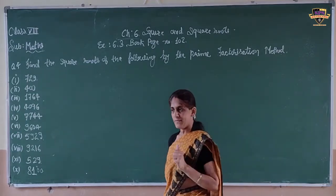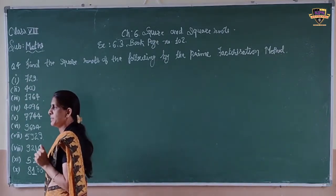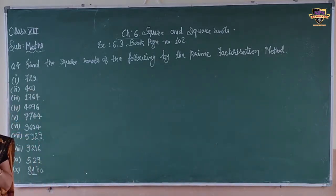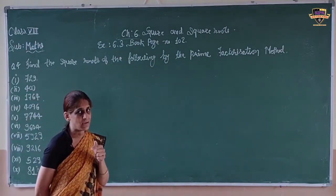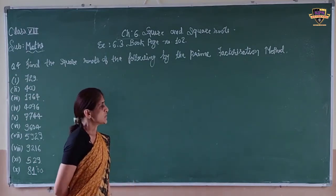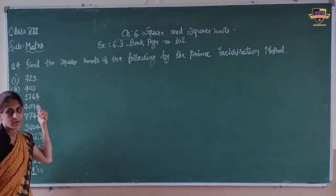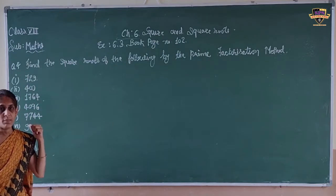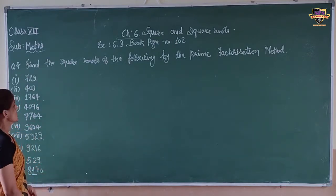Now, what is prime factorization? Prime is the word. Prime means what? A number that cannot be divisible by any number other than itself. So we have to find out the square root with the help of prime factorization.